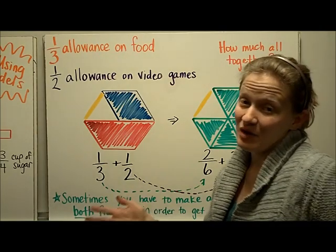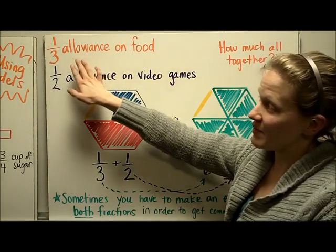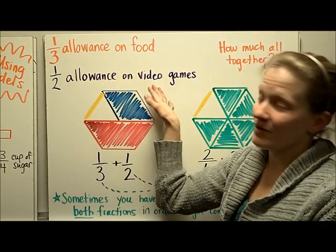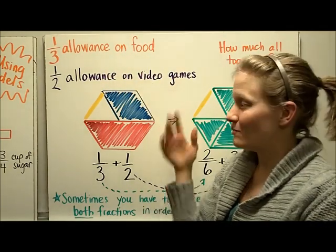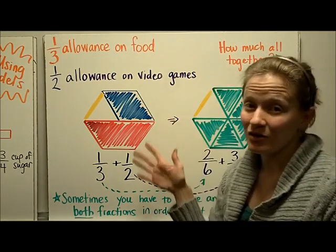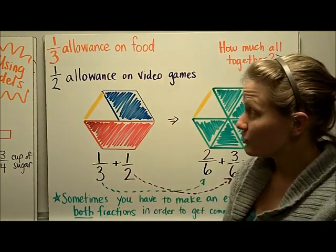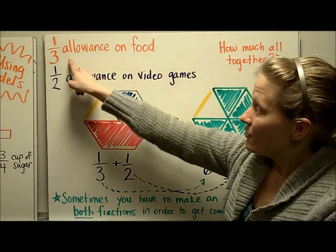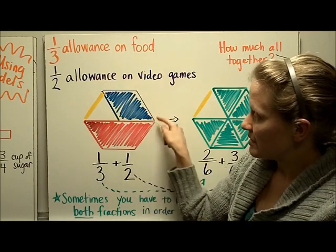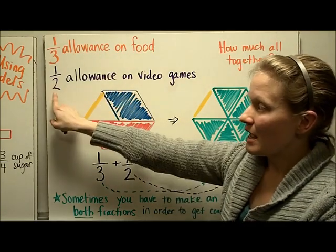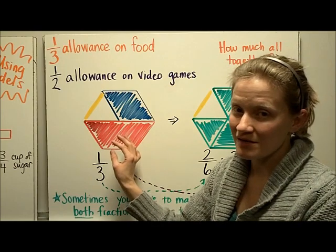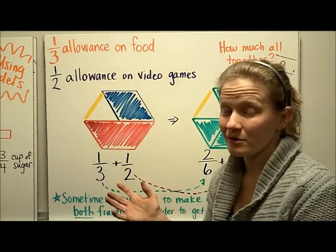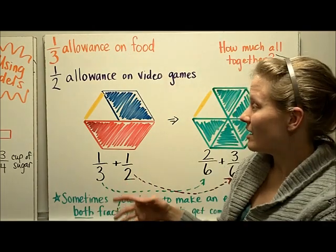Next, we're talking about if you got an allowance and you spent one-third of your allowance on snack food and one-half of your allowance to play video games at the mall. How much are you spending of your allowance altogether? You can again use hexagon pattern block pieces to figure this out. The one-third is represented by the blue piece and one-half is represented by the red piece. We want to make an exchange so that they're all the same color and have the same denominators.